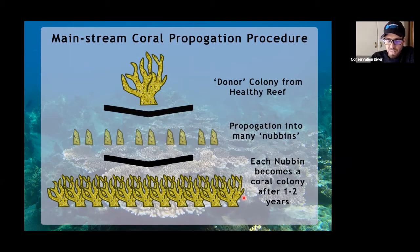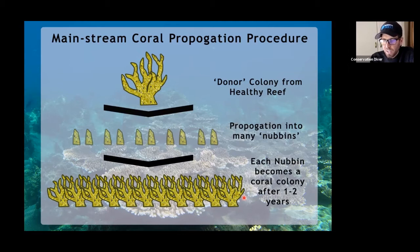You get funding from PetSmart or a hotel chain and you say, give me this money and I'll create a hundred thousand corals for you. And you can do that — you can create a hundred thousand corals and fulfill the requirements and goals of the people who gave you money.